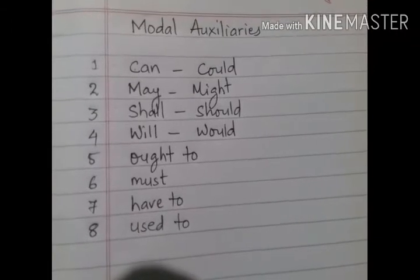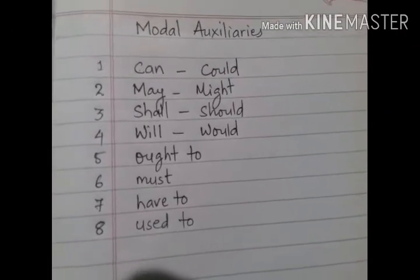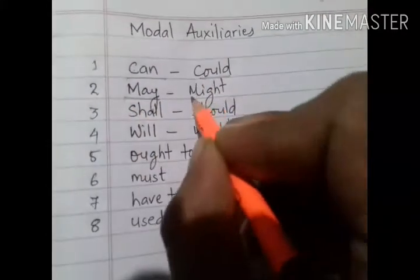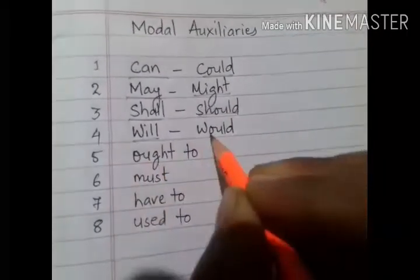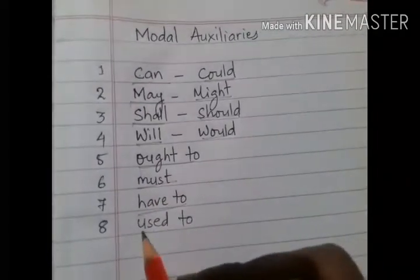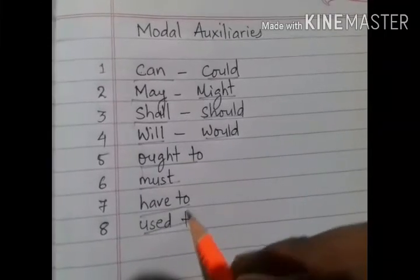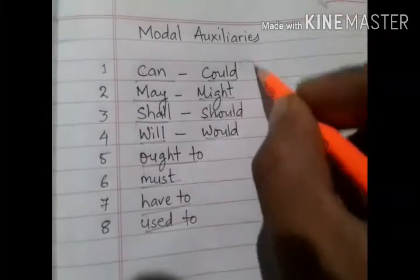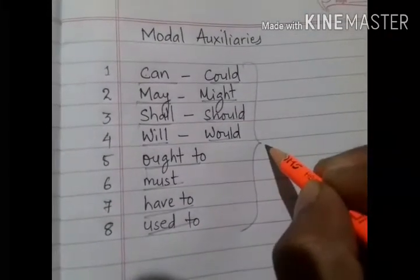You can see the list of modal auxiliaries here on the screen. They are: can, could, may, might, shall, should, will, would, ought to, must, have to, and used to. Besides these, there are other modal auxiliaries also, but these are the ones we often use in our daily sentences.